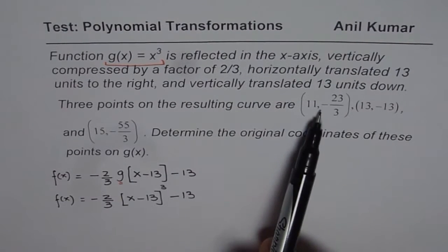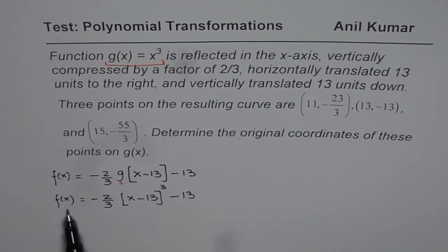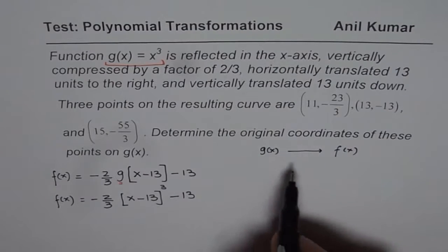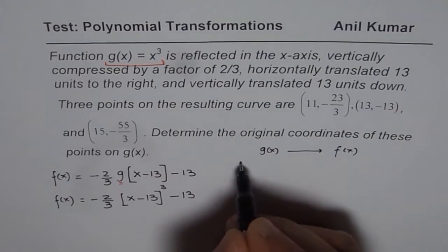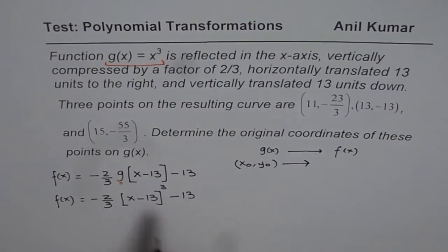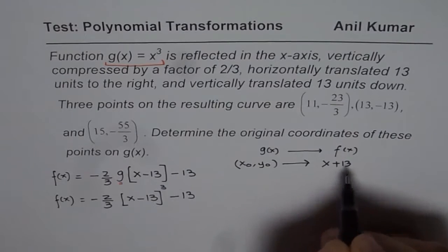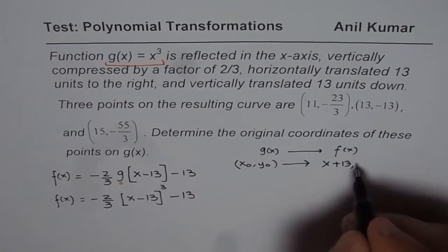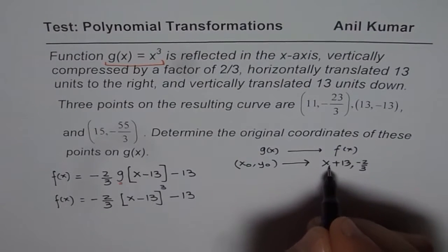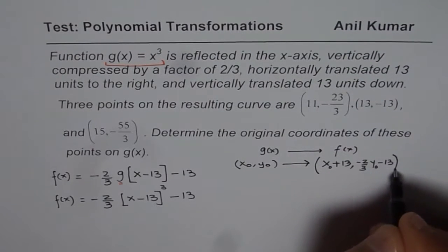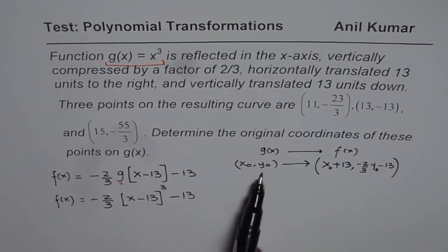Now, we are given these points which lie on f(x). We need to find the original points on g(x). Basically, g(x) gets transformed to f(x). If the original point is (x₀, y₀), then on f(x) the x-coordinate becomes x₀ + 13, since it is translated 13 units to the right. The y-coordinate becomes -2/3 · y₀ - 13. That gives us the transformed point.